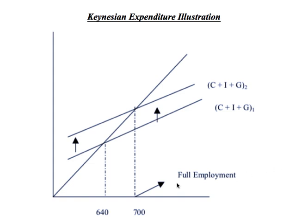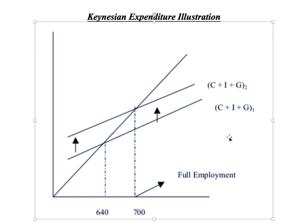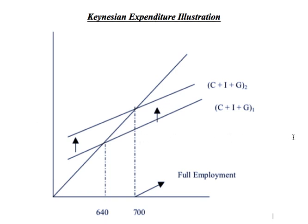If my full employment GDP is greater than my equilibrium GDP, that's a recessionary gap. Or, if my full employment GDP is less than my equilibrium GDP, that's an inflationary gap. In this particular case, I have a recessionary gap.